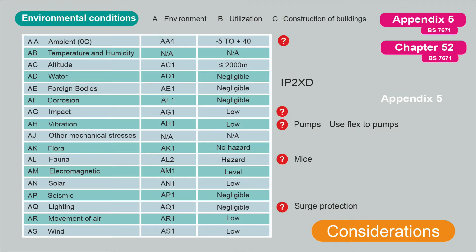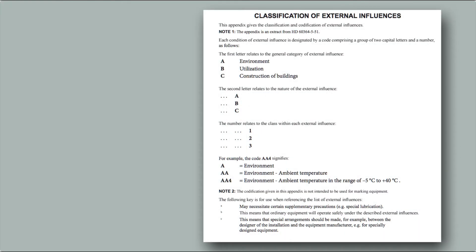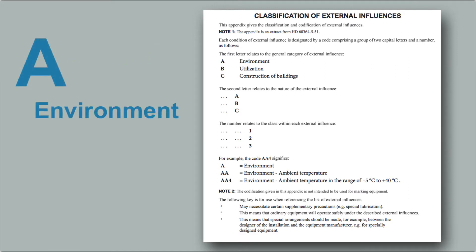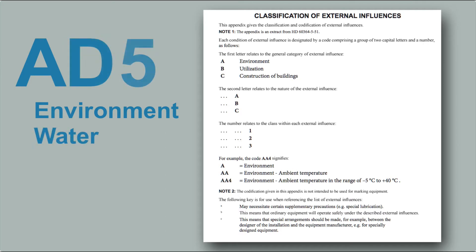Then we've got to think about environmental conditions — this is all from Appendix 5 in BS 7671. Appendix 5 is really quite useful. It might seem a little complicated as it's based on the 2396 design and verification, often used for complex installations where you need good documentation of your design process. There are three categories: environment, utilization, and construction of buildings.